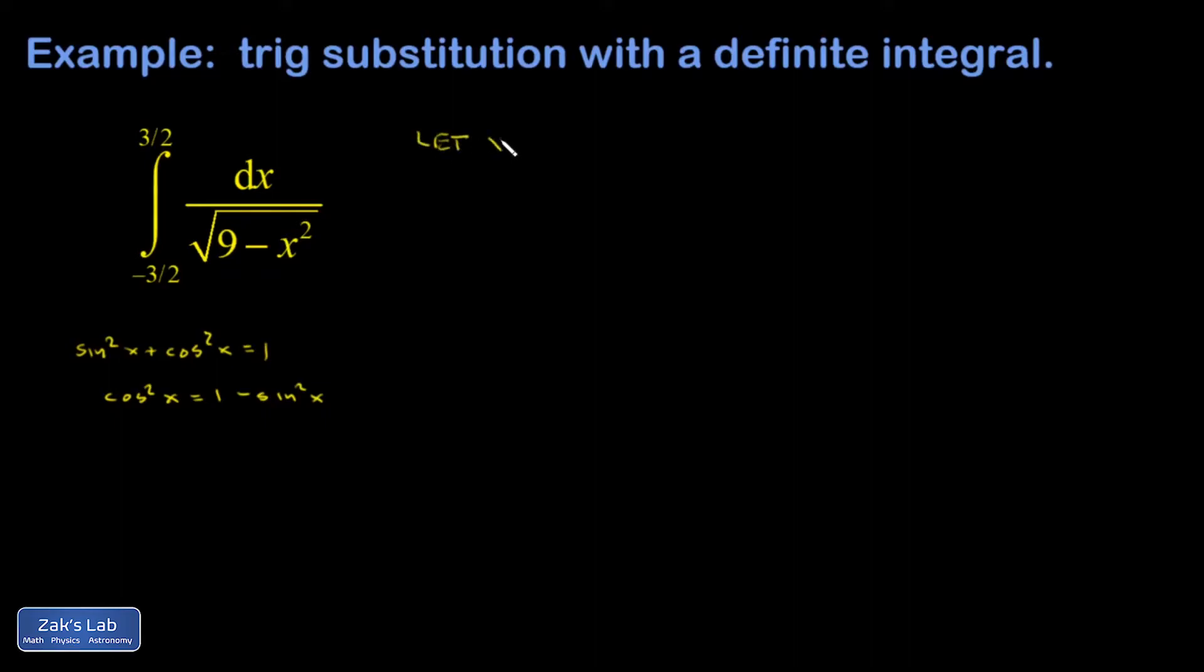Let x equal 3 sine of some new variable theta. That means that dx is 3 cosine theta d theta. One thing I wanted to do with this integral is just forget about x forever once we've made the substitution, and that means I have to transform the limits of integration from x limits to theta limits.